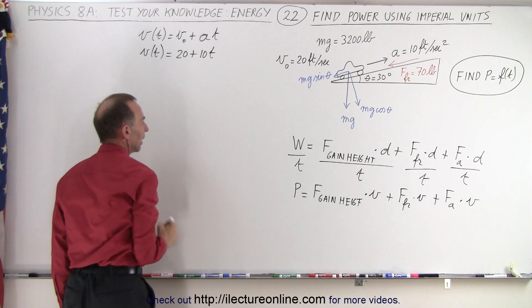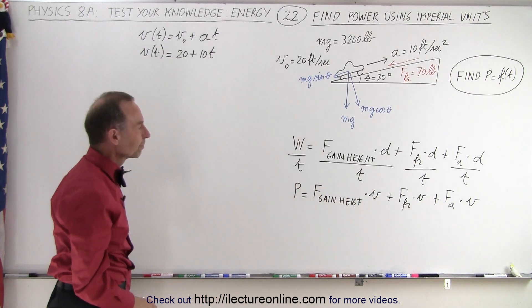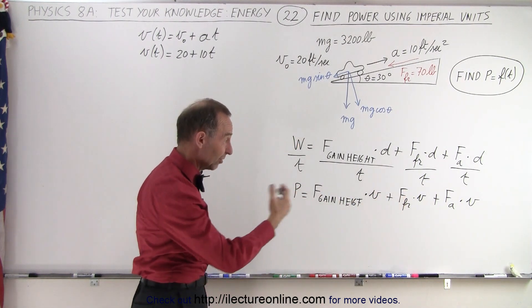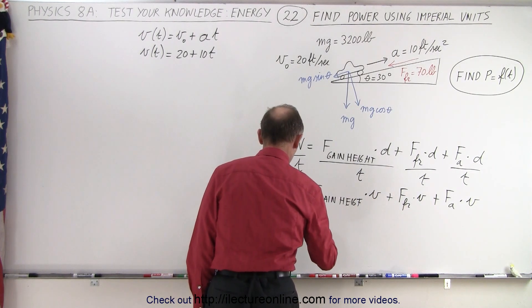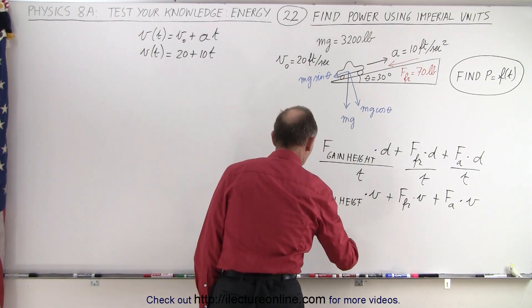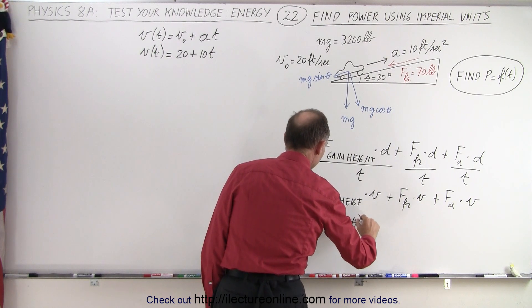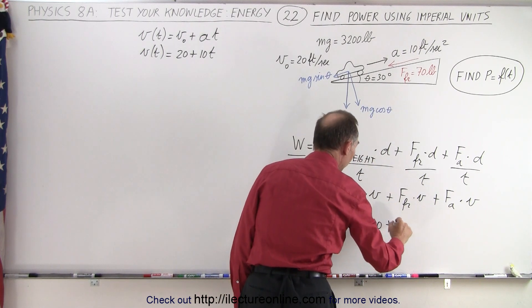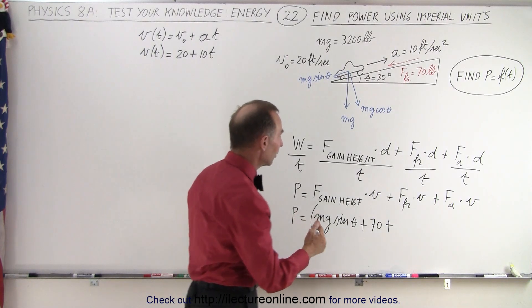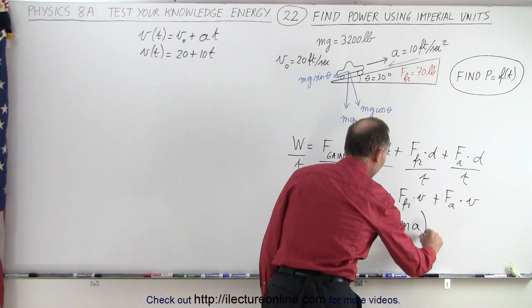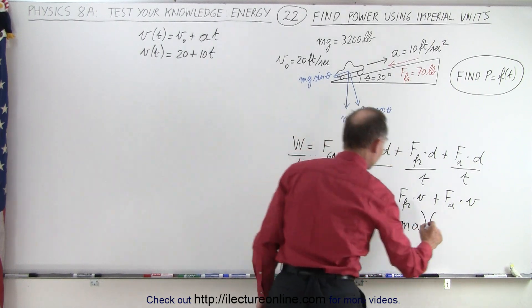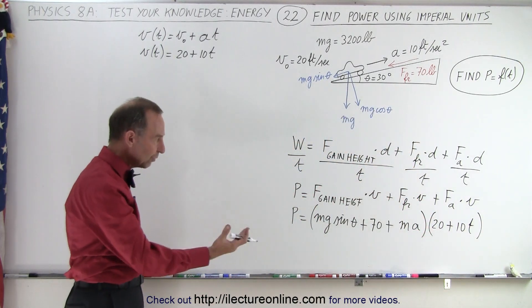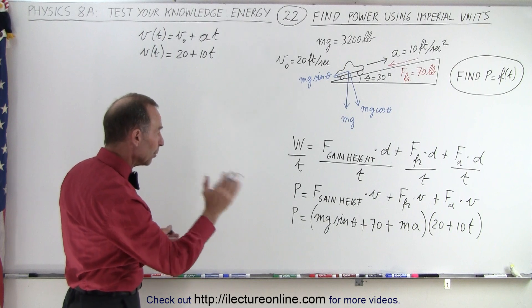We can factor out velocity since it's the same for all three terms. So power equals the force to gain height — which is mg·sinθ — plus the force to overcome friction, which is 70 pounds, plus the force to cause acceleration, which is mass times acceleration, all multiplied by v, which equals 20 + 10t.